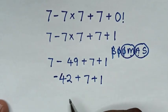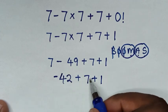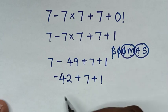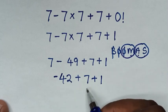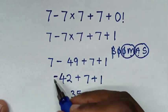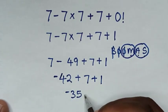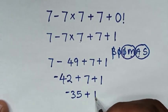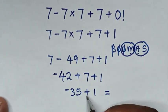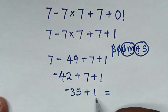Then in the next step we'll do the first operation of negative 42 plus 7. Since the negative is greater than 7, 42 minus 7 is 35, and it will be negative. So we are left with the operation of negative 35 plus 1.